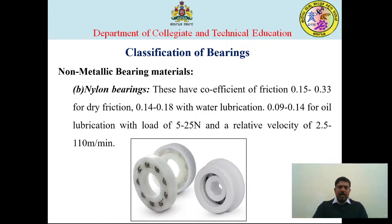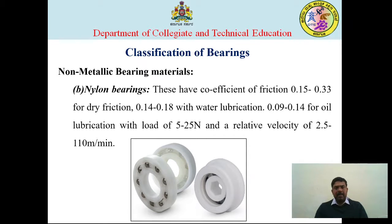So till now we have discussed the classification of bearings starting from fabric materials, tin-based bearing materials, copper-based bearing materials, aluminium-based bearing materials, cadmium-based bearing materials, silver-based bearing materials, and finally non-metallic bearing materials.